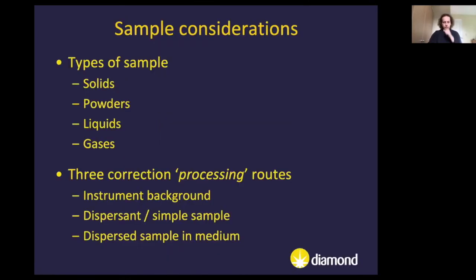When writing this paper, we put forward sample considerations. Before choosing your correction route, you need to consider what kind of sample you have — solid, powder, liquid, or gas. These simple states of matter get you a long way in thinking about which correction routes to follow for your data reduction.